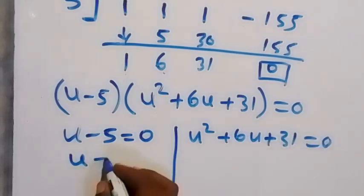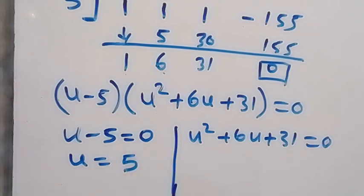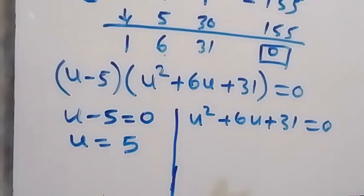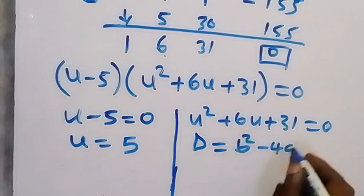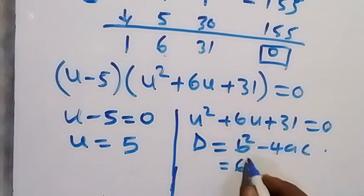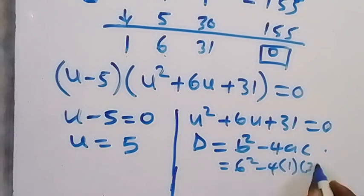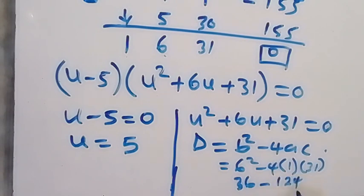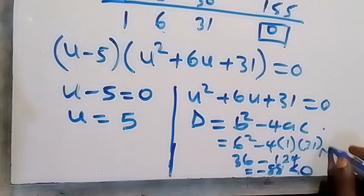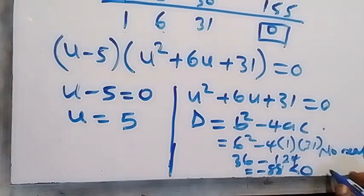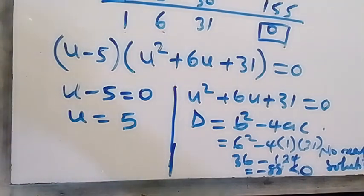On one side, u equals 5. On the other side, we can check if we are going to have a real solution using the discriminant: b squared minus 4ac. There is no real solution from that quadratic.